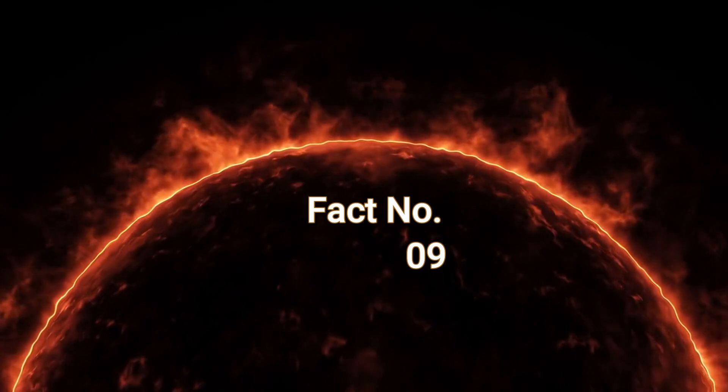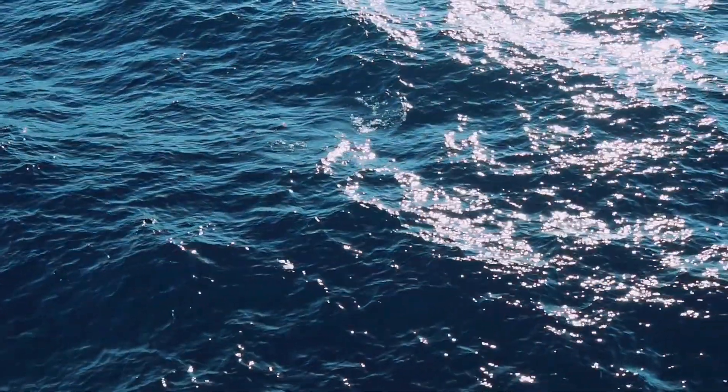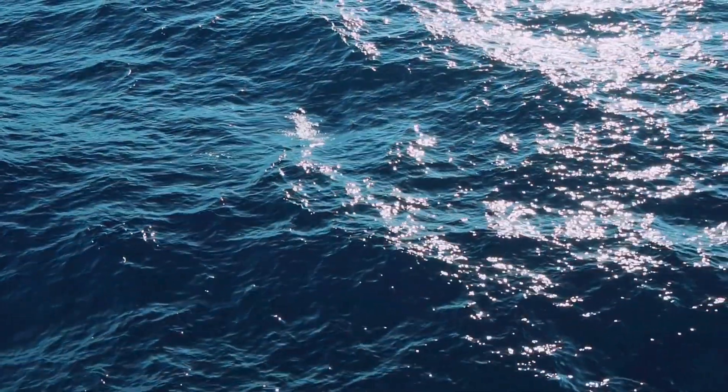Fact number nine, the sun's surface has waves. The sun's surface is not flat but is actually covered in waves, similar to those found in the ocean. These waves are caused by sound waves moving through the sun's atmosphere.